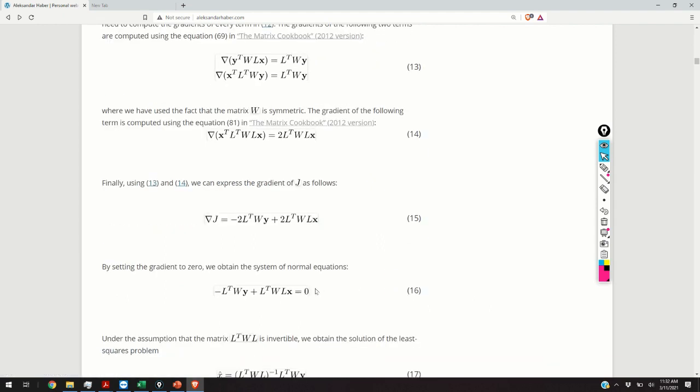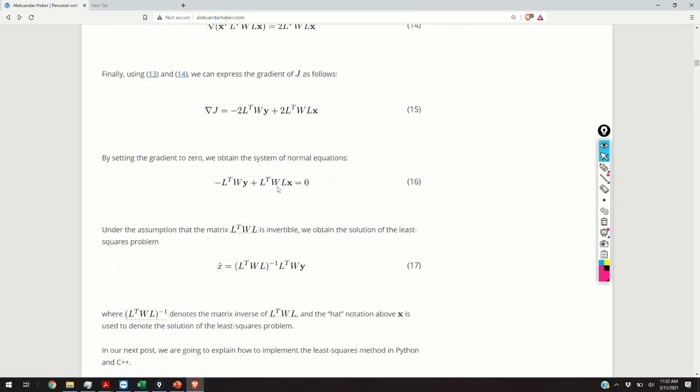So, the final expression for the gradient will be given by the equation 15. And, by setting the gradient to 0, we arrive at the system of normal equations. By solving these equations, that is, by solving the equation 16, we obtain our least squares estimate.